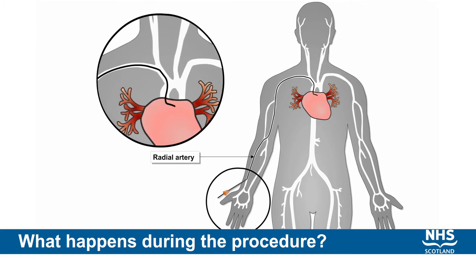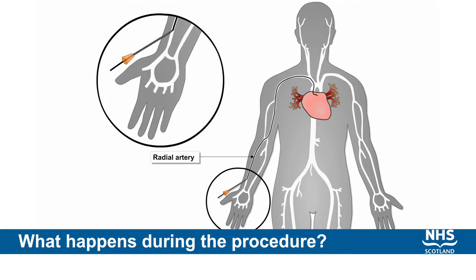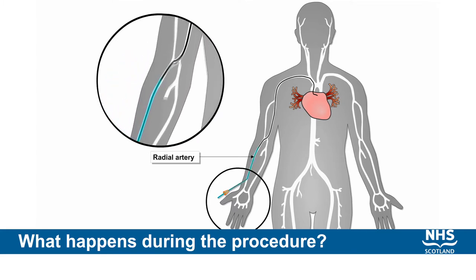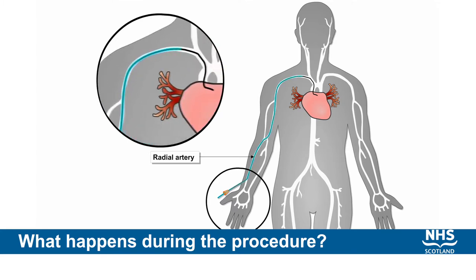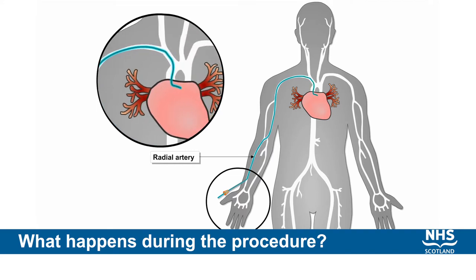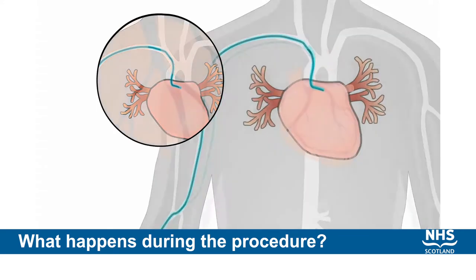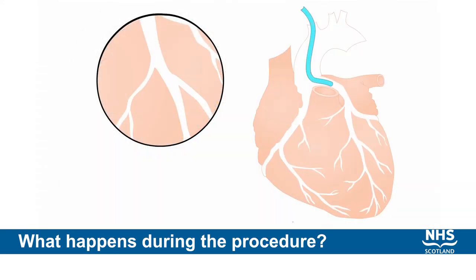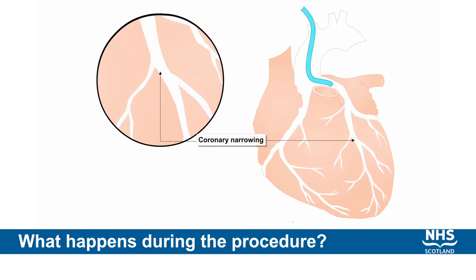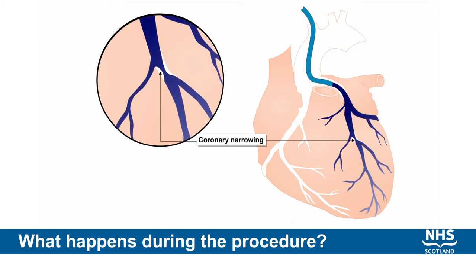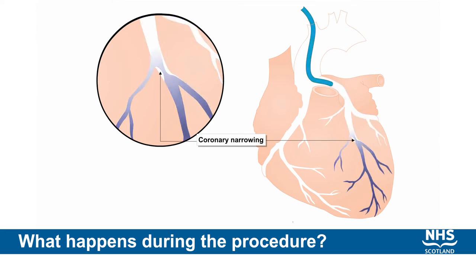These catheters can be passed up into the heart and we can use special radio contrast to take x-ray pictures of the coronary arteries supplying the heart muscle. We can get an outline of the arteries and a very clear picture of the heart chambers. This is the most sensitive measure we have of imaging the narrowings in the coronary arteries.